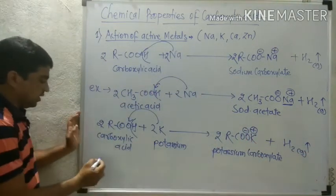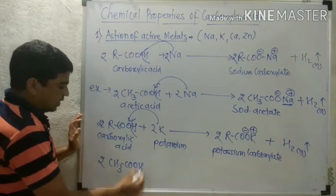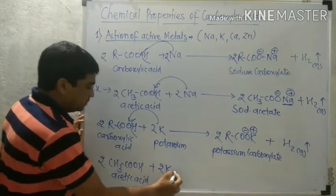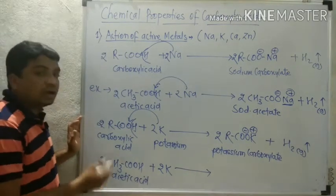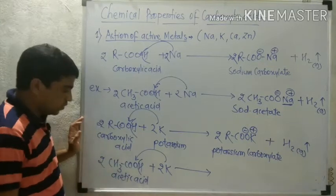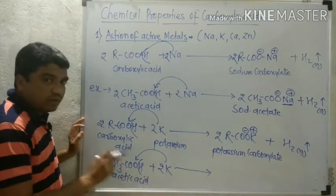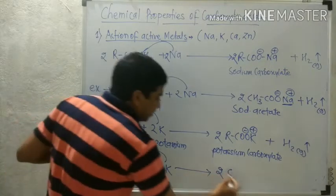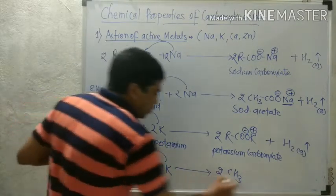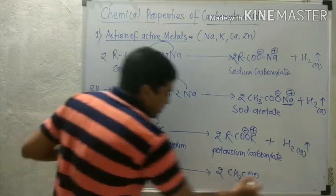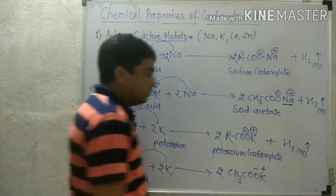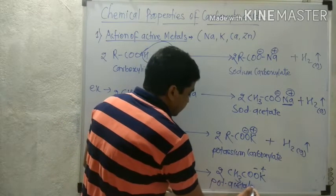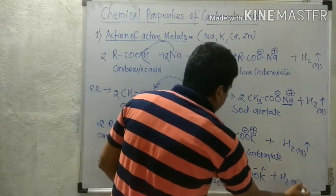For example, two molecules of acetic acid (CH₃COOH) reacted with two atoms of potassium. The hydrogen atom is replaced by potassium. We obtain CH₃COO⁻K⁺ — potassium in the structure of acetic acid — therefore called potassium acetate, along with evolution of hydrogen gas.